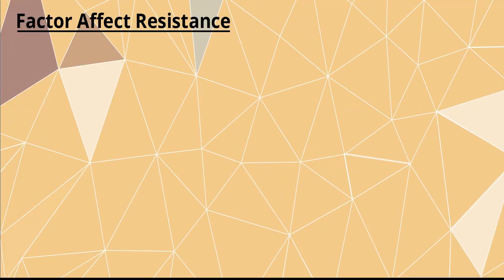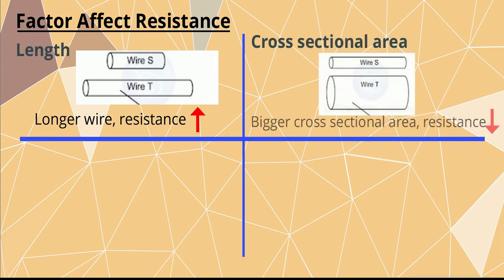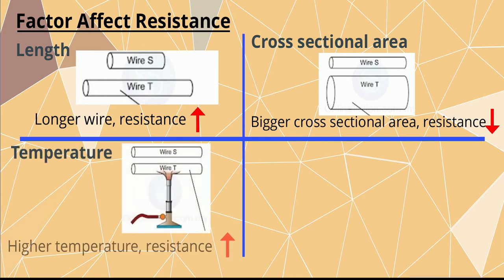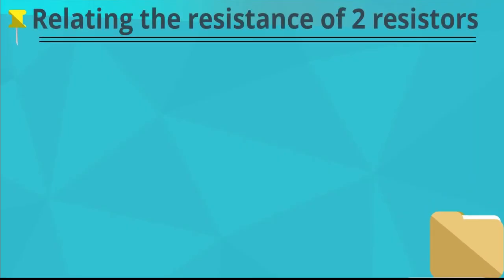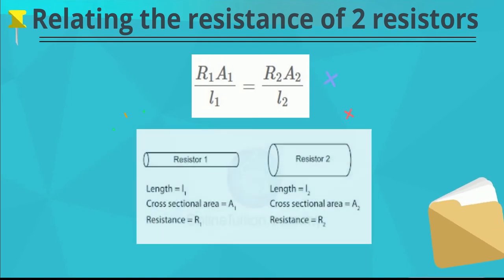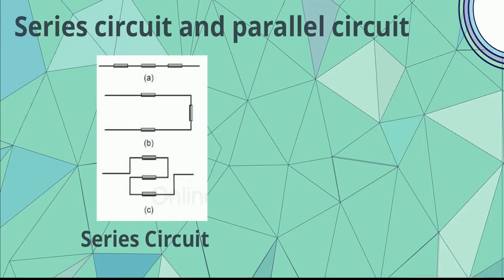The resistance of a given conductor depends on its length, cross-sectional area, temperature, and type of material. Resistance is directly proportional to the length of the conductor, while inversely proportional to the cross-sectional area of the conductor. A conductor with higher temperature has higher resistance. Different materials have different resistivity. If two resistors of the same material have the same temperature, we can relate the resistance of the two resistors by the following equation.